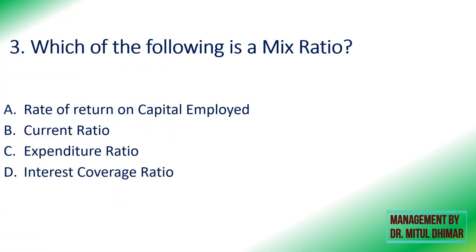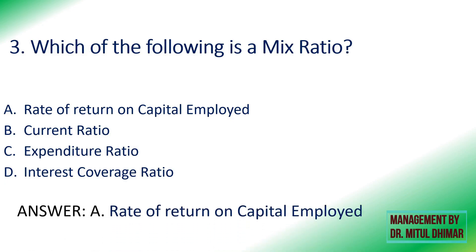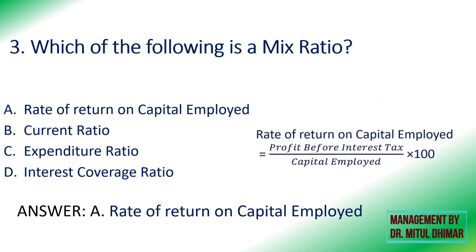Third: which is a mixed ratio — rate of return on capital employed, current ratio, expenditure ratio, or interest coverage ratio? The answer is rate of return on capital employed. A mixed ratio uses one data point from the balance sheet and another from P&L. For this ratio, profit before interest and tax comes from P&L, and capital employed — equity share, preference share, long-term debt, reserves surplus less fictitious assets — comes from the balance sheet.